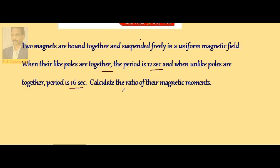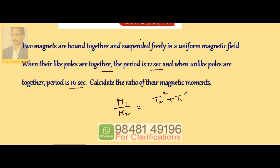We know that M1 by M2 is T2 square plus T1 square divided by T2 square minus T1 square, where T1 is the time period with like poles together and T2 is the time period with unlike poles together.